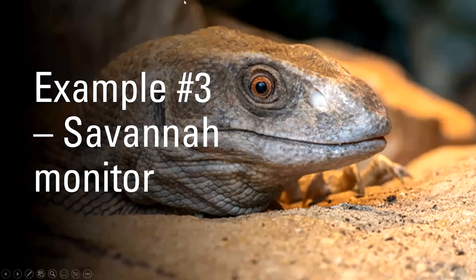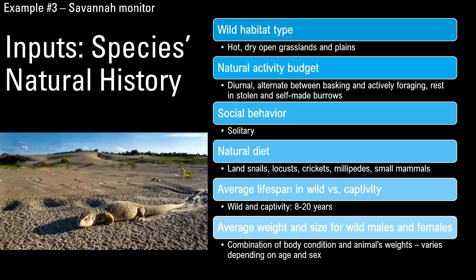The third example is one common with Savannah and black and white throat monitors — more of a rescue situation or an animal coming in from private ownership. This is an example of poor private ownership; it's not representative of what I think private ownership looks like, but it's one I've run into and that some people in this course have also encountered.